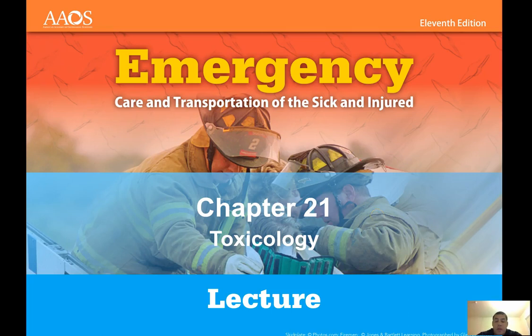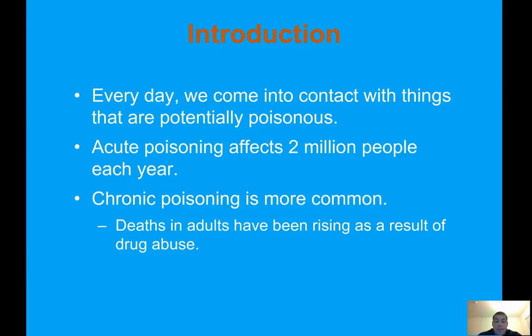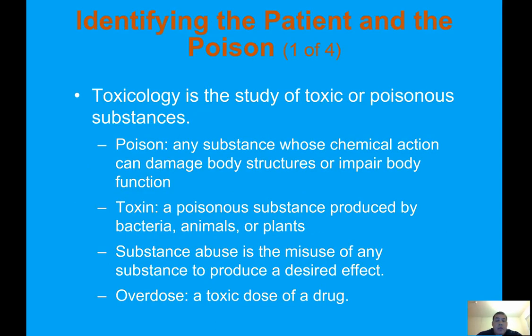Good morning class. Today we're going to go over Chapter 21, Toxicology Introduction. Every day we come into contact with things that are potentially poisonous. Acute poisoning affects 2 million people each year; chronic poisoning is more common. Deaths in adults have been rising as a result of drug abuse. Toxicology is the study of toxic or poisonous substances. A poison is any substance whose chemical action can damage body structures or impair body function. A toxin is a poisonous substance produced by bacteria, animals, or plants.